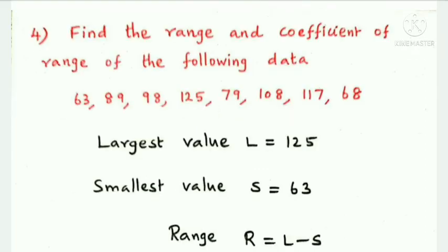Next question: find the range and coefficient of range of the following data — 63, 89, 98, 125, 79, 108, 117. From the given data, the largest value is 125 and the smallest value is 63.